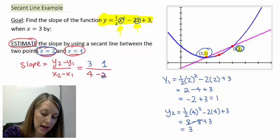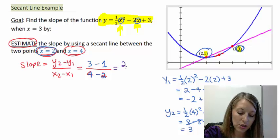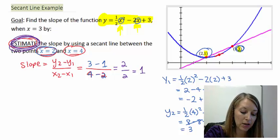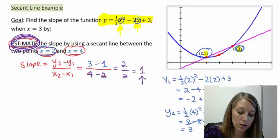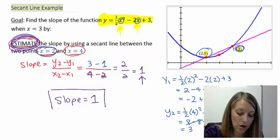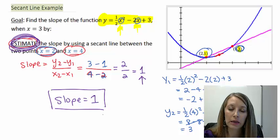So I substitute that in the corresponding x value that I have here. So my change of y's gives me a 2, my change of x's gives me a 2. So the slope that I have estimated here is this slope to be 1. So we use the secant line to estimate our slope by using two points that are close to our point in question.